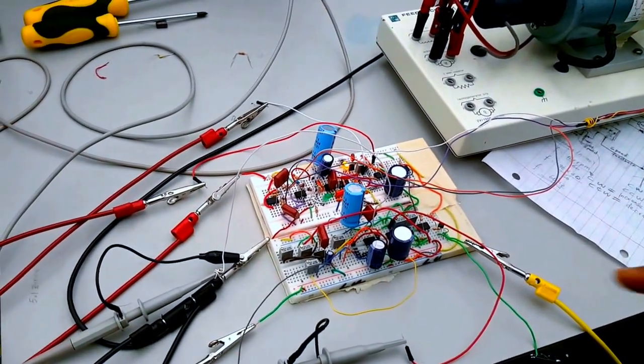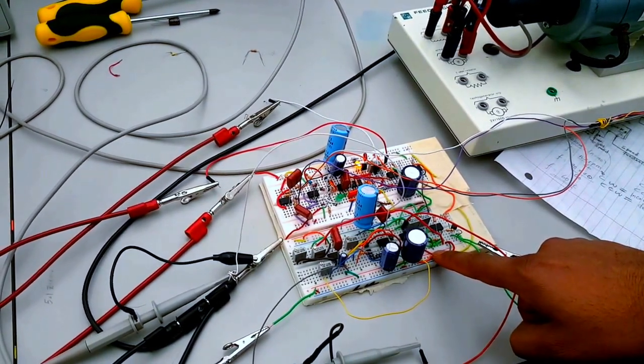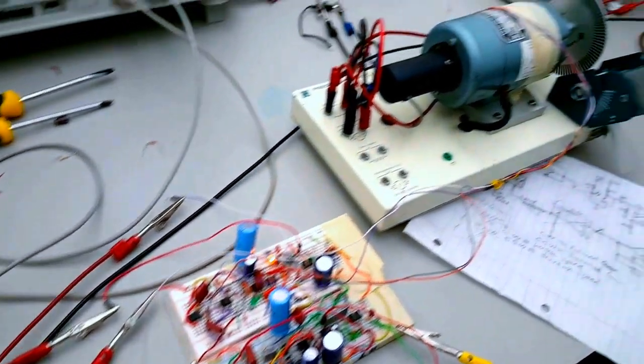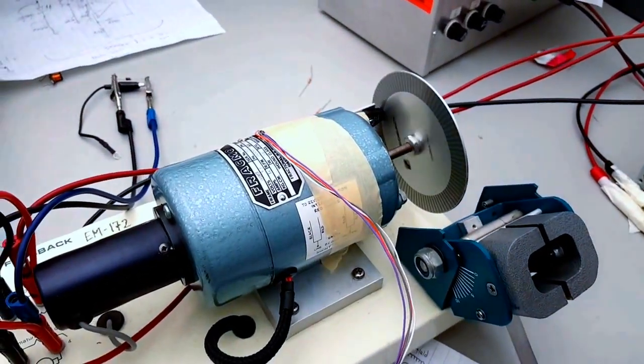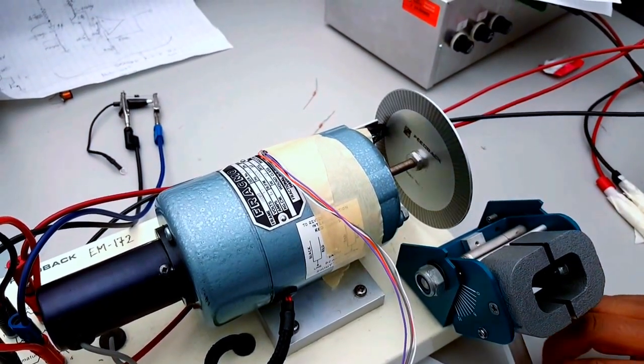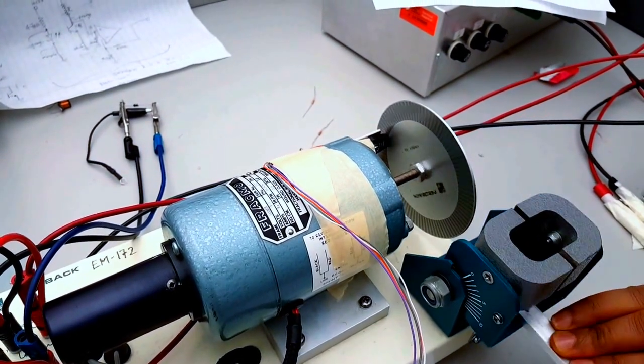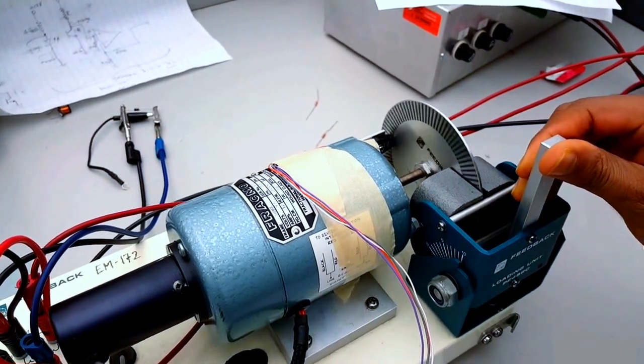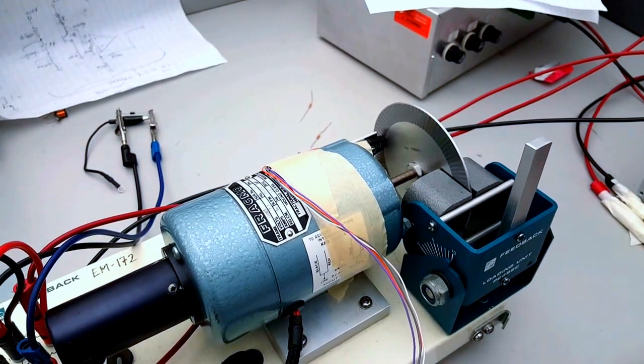Here we have a DC motor speed controller. Right now the motor is turning at constant speed, and it doesn't matter whether we load it or not—the motor will turn at a constant speed. As you can see, through magnetic braking we're loading the motor and the speed is not changing noticeably.